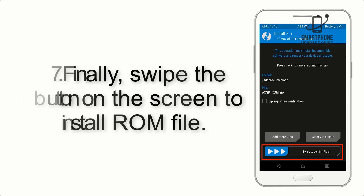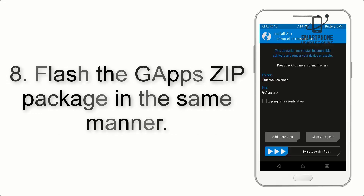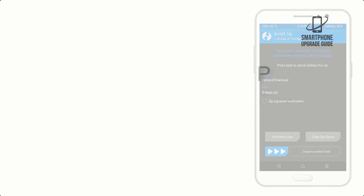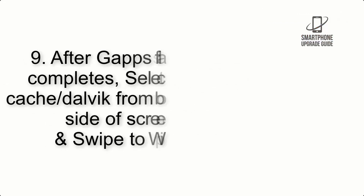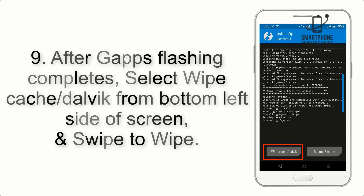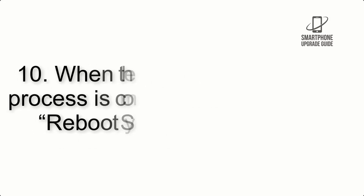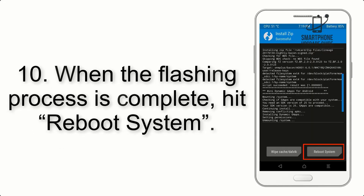Step 7: Swipe the button on screen to install the ROM file. Step 8: Flash the GApps zip package in the same manner. Step 9: After GApps flashing completes, select Wipe Cache and Dalvik from the bottom left side of the screen and swipe to wipe.